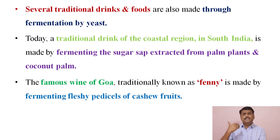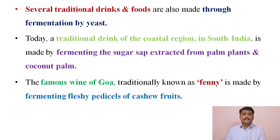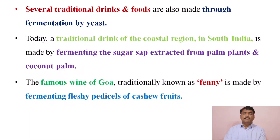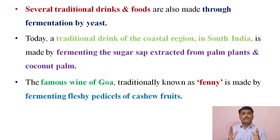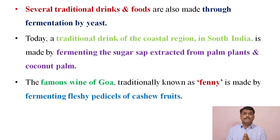So this is the first part of the production of alcoholic beverages using different types of microorganisms. With the help of different types of substrates, different types of alcoholic beverages can be produced. In the next lecture, we will see the next point of this topic.